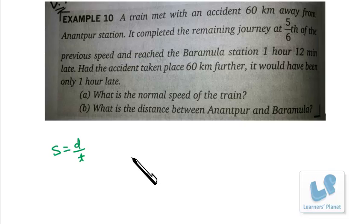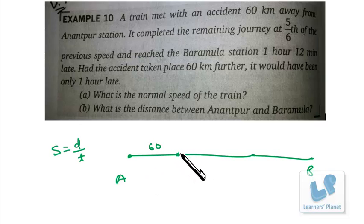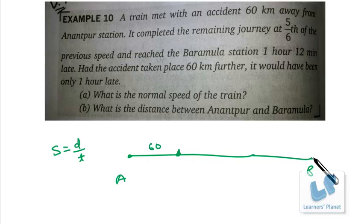We have two stations — the starting point Anantapur and the ending point Baramula. The accident took place 60 km from Anantapur, so this distance is 60 km. After the accident, the train covers the remaining journey at 5/6 of the original speed. Now, if the speed is 5/6, then the time taken will be 6/5 — this concept applies because if speed is half the time doubles, if speed is one-third time is three times.